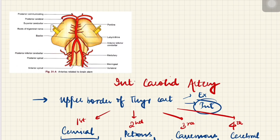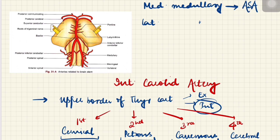An important clinical question asked frequently is: what are the arteries responsible for the medial and lateral medullary syndromes? The medial surface of the medulla is supplied by the anterior spinal artery, so medial medullary syndrome is due to thrombosis of the anterior spinal artery. The lateral surface of the medulla is supplied by the vertebral arteries, so lateral medullary syndrome occurs due to thrombosis of the vertebral artery. These are two important questions asked frequently as MCQs as well as in vivas.